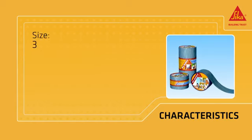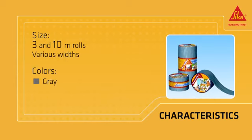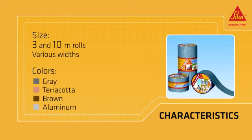It comes in rolls 3 and 10 meters long in a variety of widths. The range of colors includes gray, terracotta, brown and aluminum.